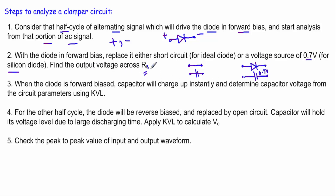After calculating the voltage across the load resistor RL, I have to calculate the capacitor voltage Vc. During forward bias, the capacitor charging time constant is very small. Therefore, I will assume that the capacitor charges up instantly. To determine the capacitor voltage Vc, I will apply Kirchhoff's voltage law in the circuit to calculate how much voltage the capacitor stores during the positive half cycle.